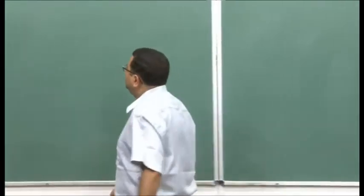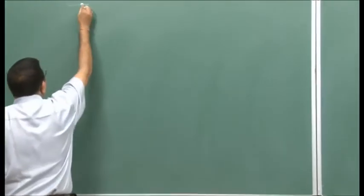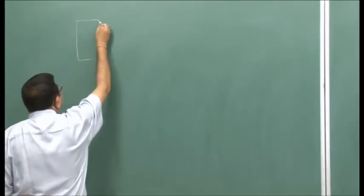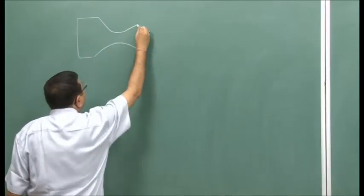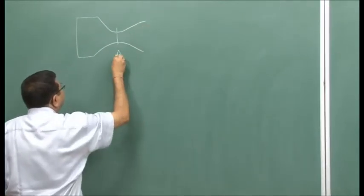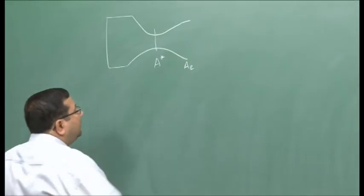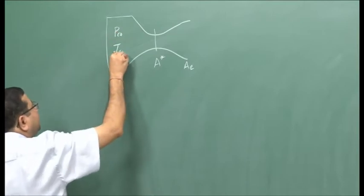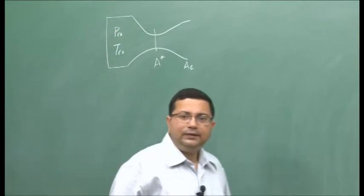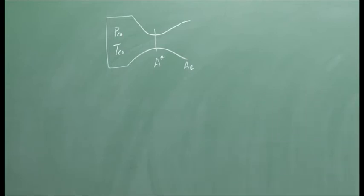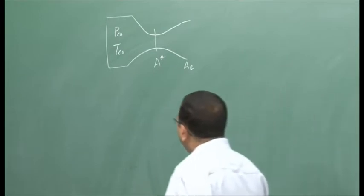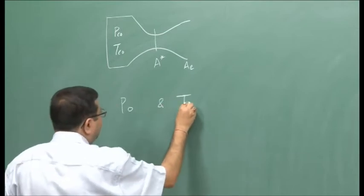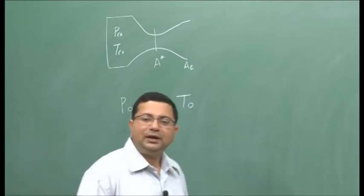A rocket nozzle is always a converging-diverging nozzle. The throat area is A*, the exit area is Ae, and the combustion chamber pressure and temperature are Pc₀ and Tc₀. The general expression for mass flow rate for compressible flows has the terms P₀ and T₀, that is the stagnation pressure and stagnation temperature.